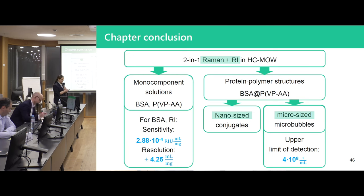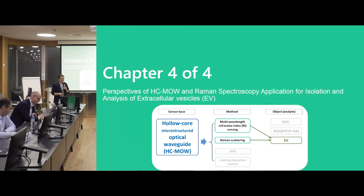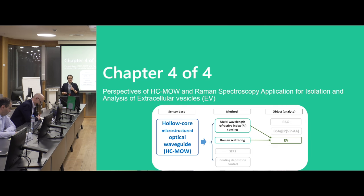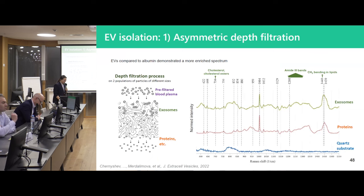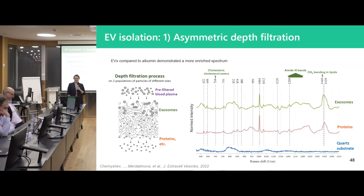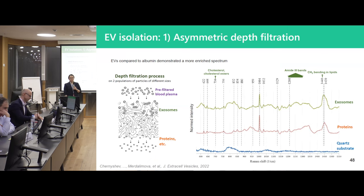Chapter conclusion: we provided two-in-one Raman and refractive index sensing in hollow core waveguides — first for monocomponent solutions of BSA and PVP with sensitivity and resolution estimated, then for more complex protein-polymer structures including nano-sized conjugates and micro-sized microbubbles. For microbubbles, an upper limit of detection was found due to high scattering in the refractive index sensor — around 4×10⁸ particles per milliliter.